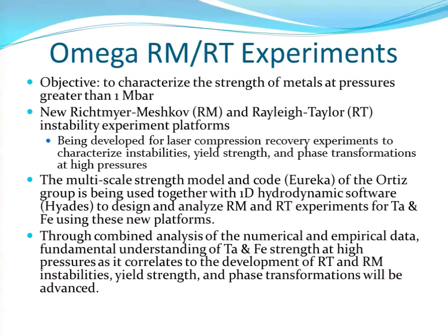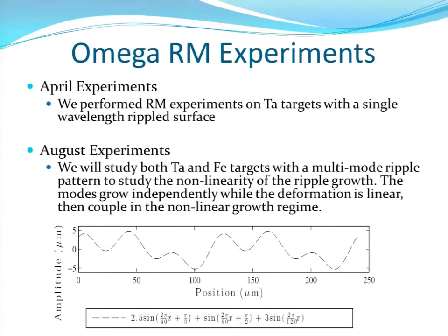The first time we did this ride-along experiment was in April, and we performed experiments using a single wavelength — just the simple ripples I've shown before. In August, we're going to do this again with a multimode pattern. Instead of just a simple ripple, we have different modes. The purpose is to study the non-linearity of the ripple growth — typically the modes grow independently when it's linear, but when it's non-linear they couple together. We're going to see if that actually happens.